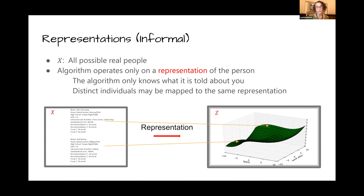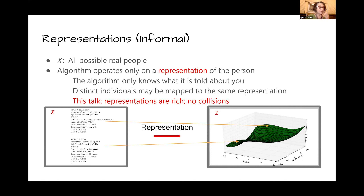Informally, suppose we have a set X of all possible real people. The algorithm only operates on the representation of the person — it only knows what it's told about you. Distinct individuals might be mapped to the same representation, as we saw in the metastasis study. But in machine learning, representations are rich. It may be the case that the representation is so rich that no two people are ever mapped to the same point in representation space — and that's what we'll be assuming for this talk: rich representations with no collisions.